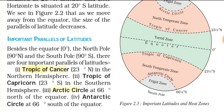Now, some parallels are important parallels of latitudes. Besides the equator at 0 degrees, the North Pole at 90 degrees North, and the South Pole at 90 degrees South, there are 4 important parallels. The first is the Tropic of Cancer at 23 degrees North in the Northern Hemisphere, and the next is the Tropic of Capricorn at 23 degrees South in the Southern Hemisphere.